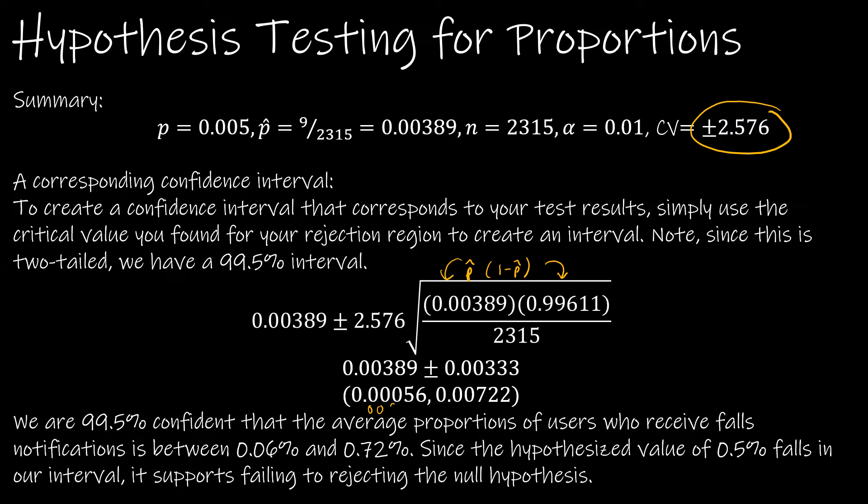And then again, we are looking at whether or not 0.005 falls between those two values, and obviously it does, and therefore it supports failing to reject the null hypothesis.